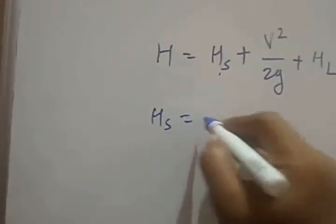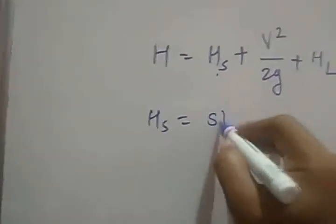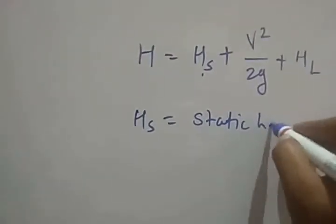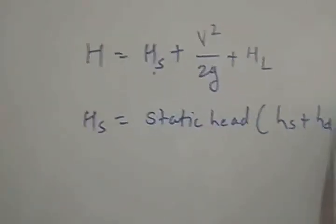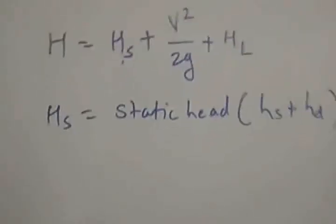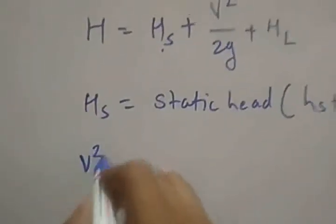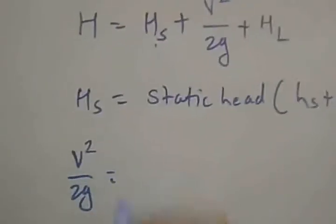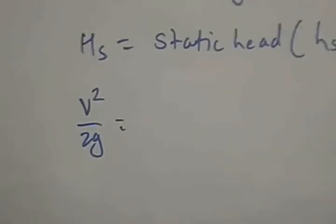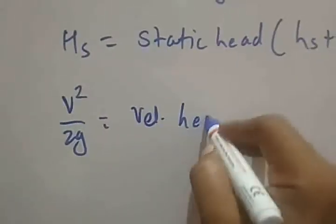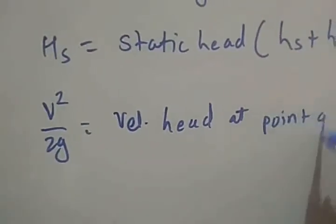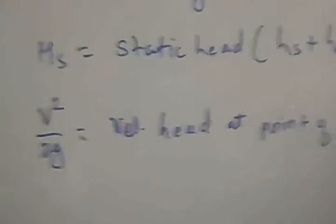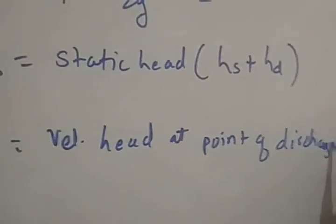Here HS is the static head, which is nothing but HS plus HD — suction head plus delivery head. Then V²/2G is the velocity head at the point of discharge.